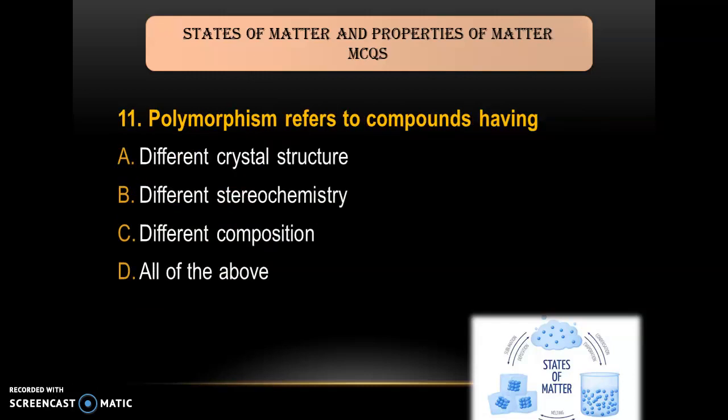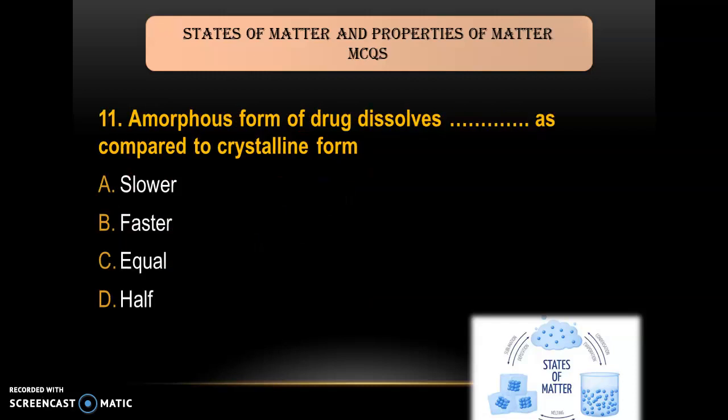Question 10: Polymorphism refers to compounds having — A) different crystal structure; B) different stereochemistry; C) different composition; D) all of the above. The answer is A — different crystal structure, because polymorphs have a different crystal structure from each other.